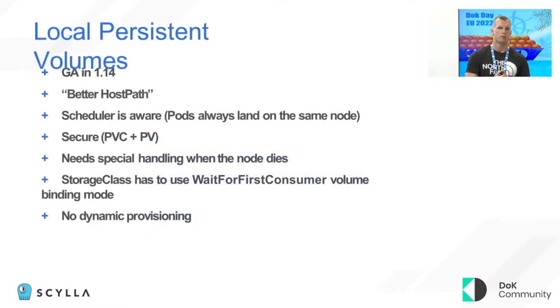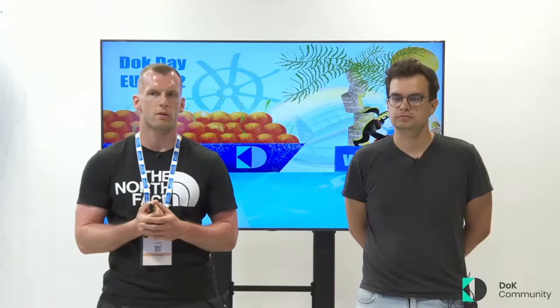So how do you get that local storage in Kubernetes? There's a feature called local persistent volumes that is GA since 1.14. It's essentially a better version of a host path, with the difference that the scheduler is aware and will always place your pods on the same node, contrary to a host path solution.